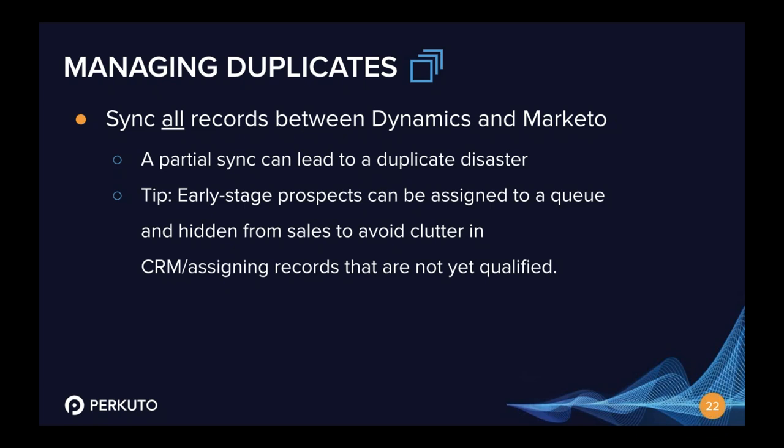A lot of people say they don't want sales to see early-stage prospects. One workaround is to sync all records but assign early-stage or unqualified people to a dedicated queue or holding user so they don't get routed to the sales team. Then have assignment rules in Dynamics listen for certain updates indicating that a person is now qualified to be rerouted to the correct sales rep because they meet the defined set of requirements.